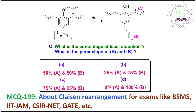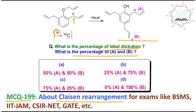Hello students, I am Dr. Tanmay Vishash. I welcome you all to my channel 'Chemistry: The Mystery of Molecules.' Today's topic is one MCQ about Claisen rearrangement. You can see allyl ethers upon heating produce a tri-substituted product. If you are able to say what is the percentage of label distribution — label means this is carbon-14 — then what is the relative percentage of A and B?